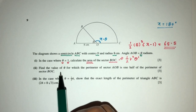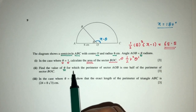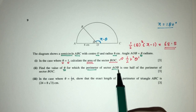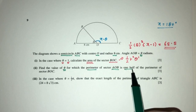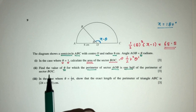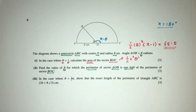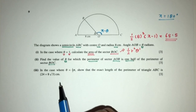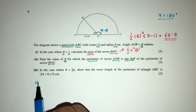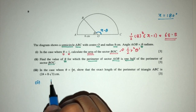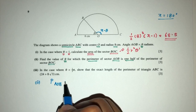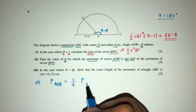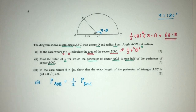Now for Part 2: we have to find the value of theta for which the perimeter of sector AOB is half the perimeter of sector BOC. So we have this equation to solve to find the value of theta.